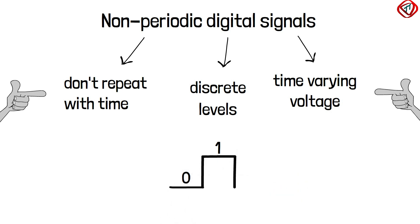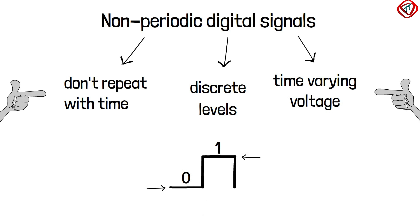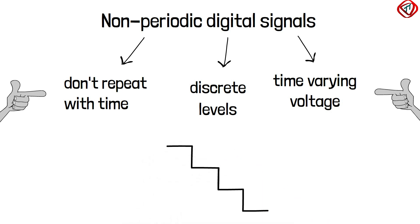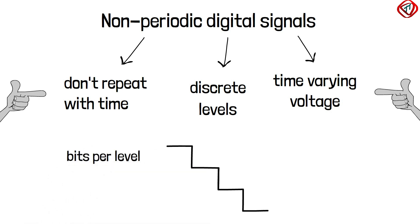Here we see only two levels, where each level is sending 1 bit. A digital signal with more than two levels can send more than 1 bit. Mathematically, the number of bits that each level can transmit is calculated as log to base 2 of L, where L is the number of levels in the digital signal.